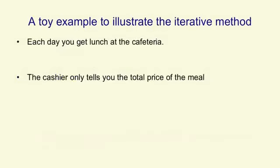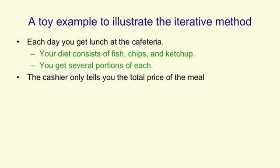I'm now going to go through a toy example that illustrates an iterative method for finding the weights of a linear neuron. Suppose that every day you get lunch at a cafeteria, and your diet consists entirely of fish, chips and ketchup. Each day you order several portions of each, but on different days it's different numbers of portions. The cashier only tells you the total price of the meal, but after a few days you ought to be able to figure out what the price is for each portion of each kind of thing.